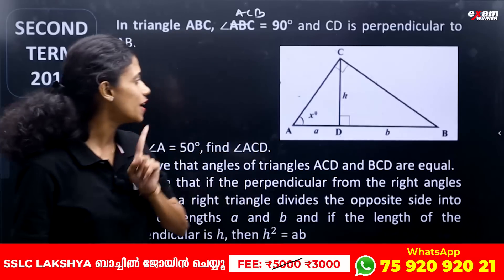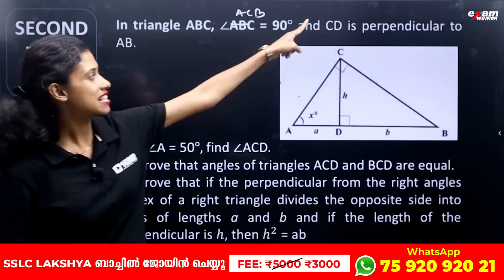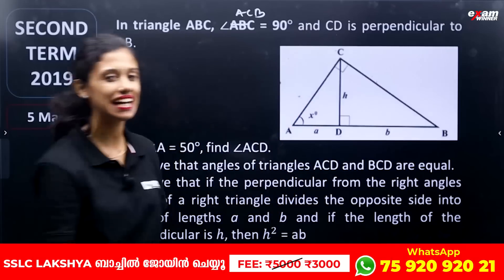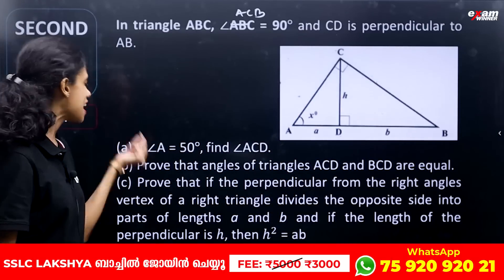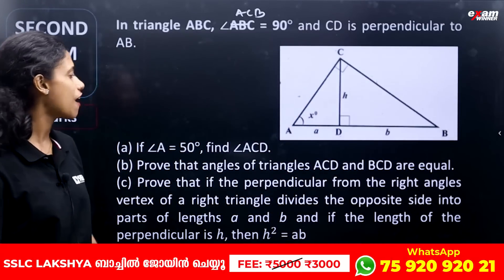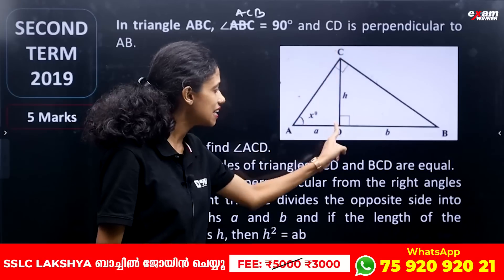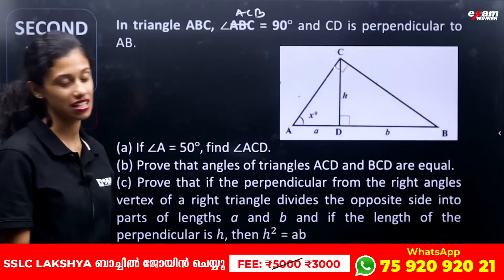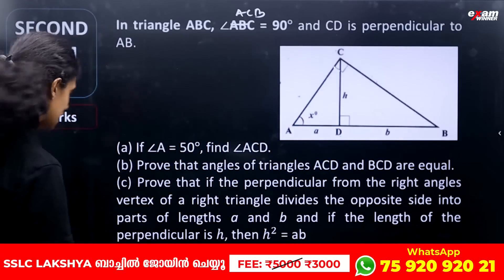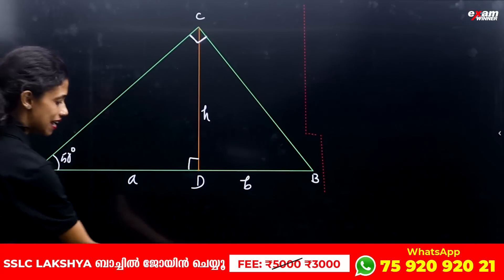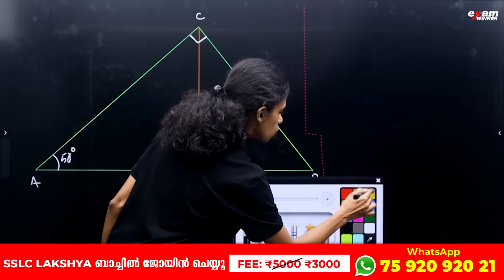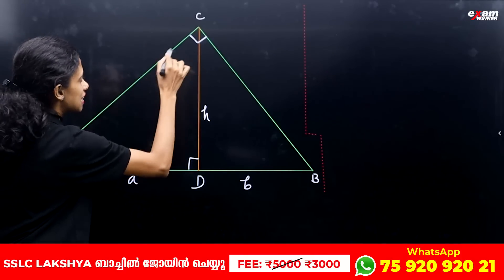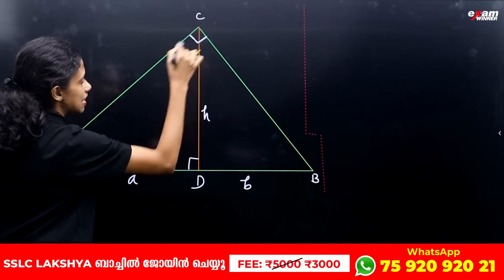CD is perpendicular to AB. If angle A is equal to 50 degrees, find angle ACD. Angle A is equal to 50 degrees, so we need to find angle ACD.